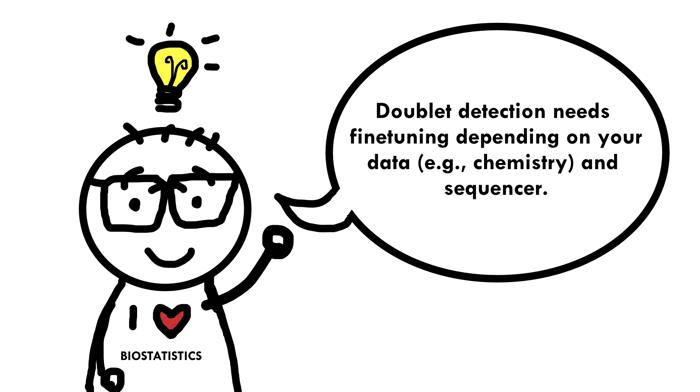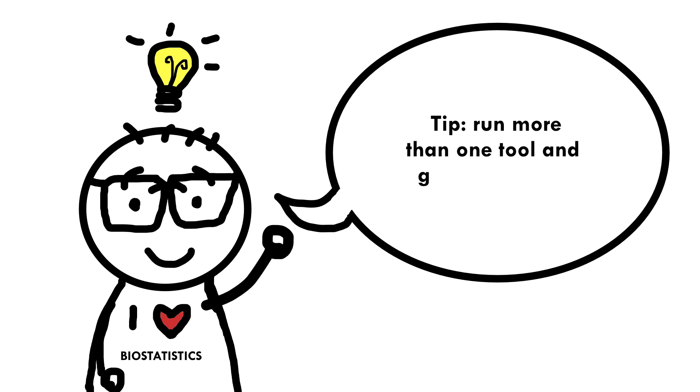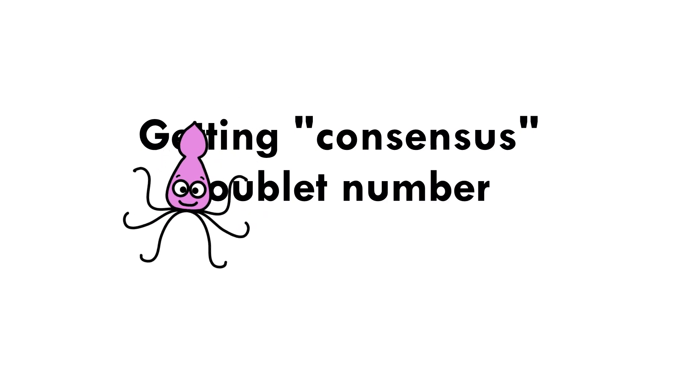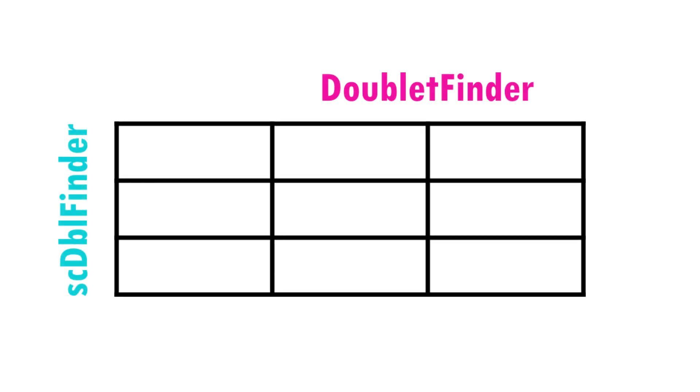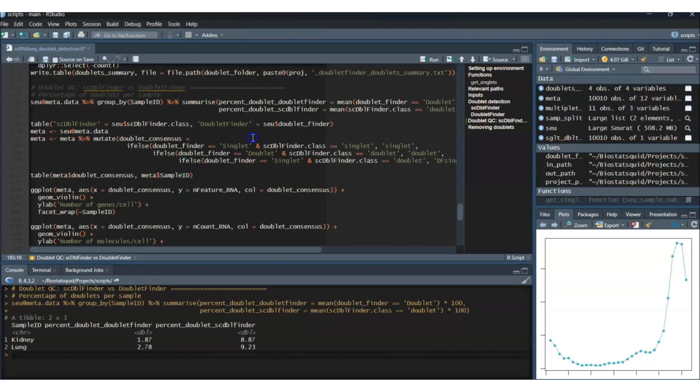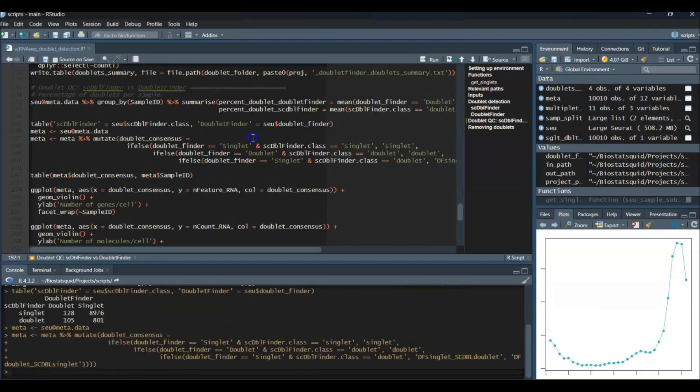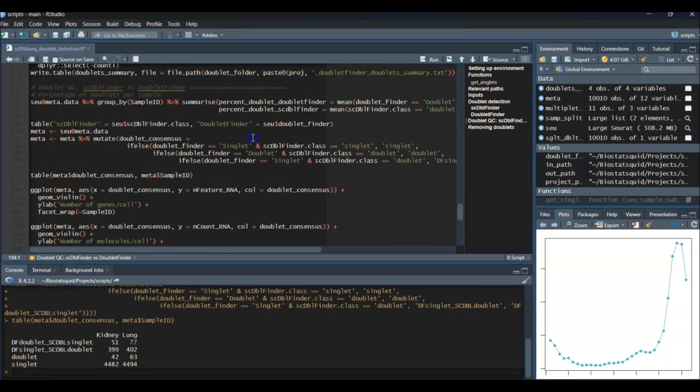Moving on, if you run a few doublet finding tools it's sometimes useful to know how many cells were classified as doublets by both tools, how many were consensus singlets, and how many differ — so were called different things by different tools. This is very easy to do with the function table. Now we can create a new column, doublet consensus, which marks cells as singlets if they were a consensus singlet, doublet if both tools agreed, and then either DoubletFinder singlet/SCDoubletFinder doublet and vice versa if the tools disagreed.